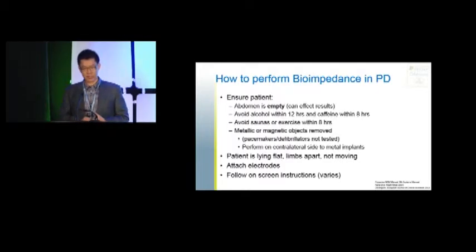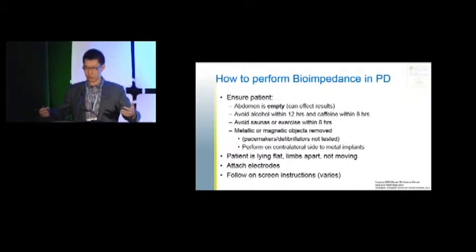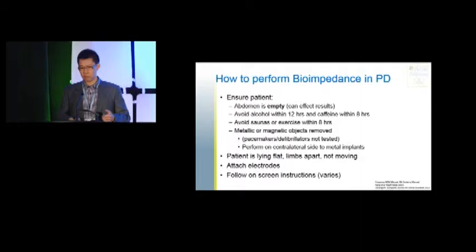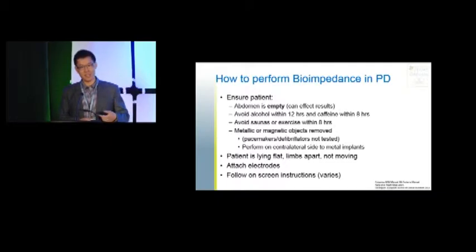After going through that checklist, make sure the patient is lying flat, limbs are spread apart, and they're not moving — because electrical current is flowing through the body. Limbs are spread apart so you don't have conductivity through the other limb. Attach electrodes as per the instructions. The Fresenius machine will ask for weight, height, and gender, whereas the RJL machine you just hook up and it spits out the numbers.